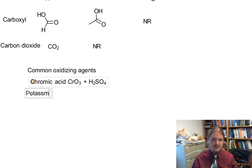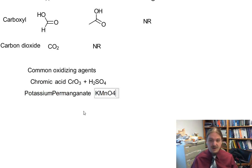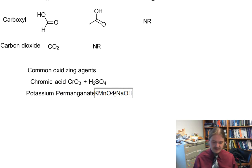Another one is potassium permanganate. Potassium permanganate is probably a familiar compound KMnO4. And KMnO4 is usually done in the presence of a base like sodium hydroxide. So it can be done in acid.